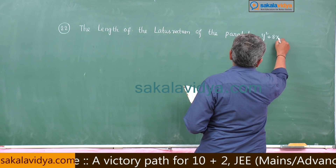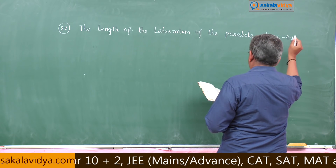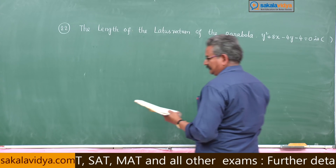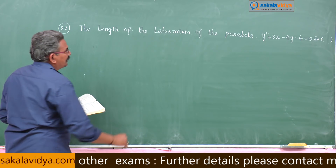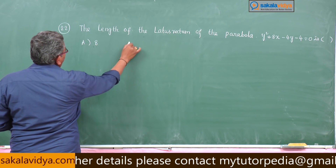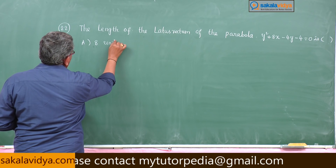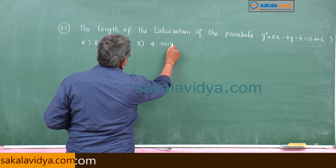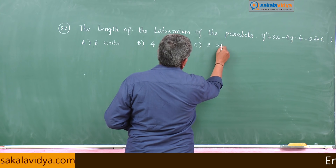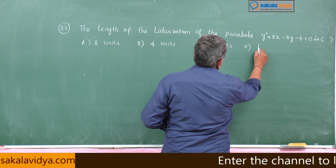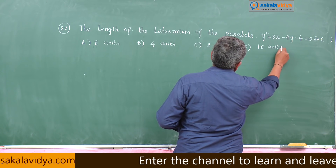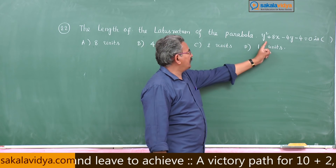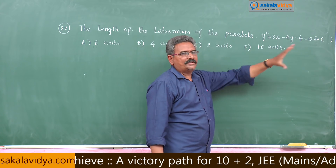Problem 22: the parabola y² + 8x minus 4y minus 4 is equal to 0. The options are: a) 8 units, b) 4 units, c) 2 units, d) 16 units. The length of the latus rectum of the parabola y² + 8x minus 4y minus 4 = 0 — we have to find out.